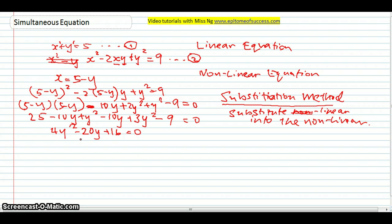So now, you can factorize it. Actually, you can use the calculator at this point. Or, to make things look easier, can you see 4y, negative 20, and 16? All of them can be divided by 4. All of them can be divided by 4. So you can simplify it to y square minus 5y plus 4 is equal to 0.